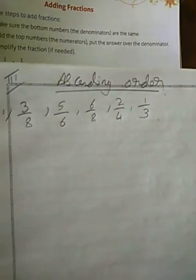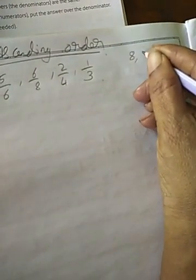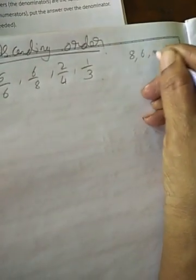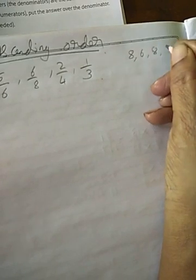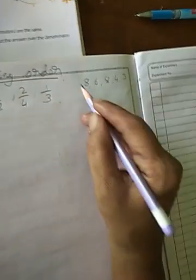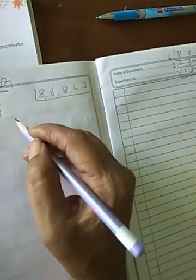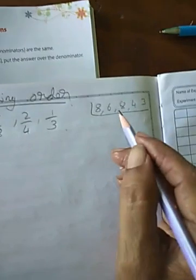So for that you have to find the LCM. For what? For the denominators 8, 6, 8, 4, 3. Ok children, you have to find the LCM for that.